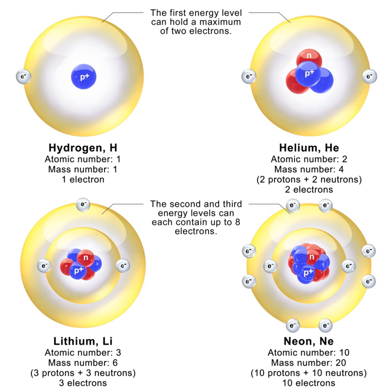Their properties and interactions are described by nuclear physics. The chemical and nuclear properties of the nucleus are determined by the number of protons, called the atomic number, and the number of neutrons, called the neutron number. The atomic mass number is the total number of nucleons.